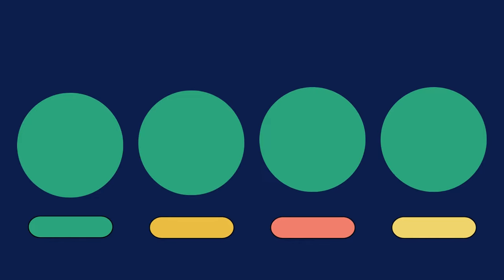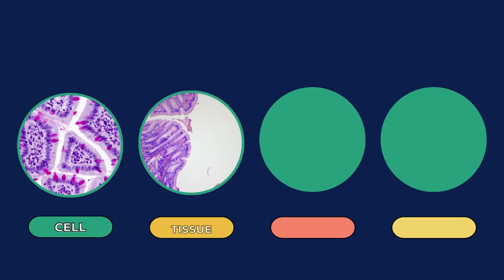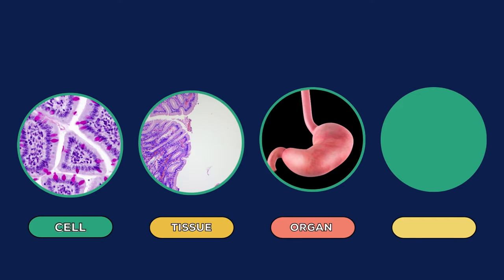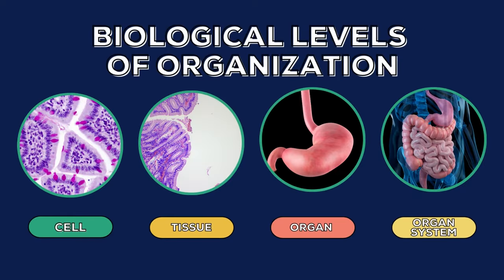Even unicellular organisms have different parts that do different specific functions. For all of us multicellular organisms — hello, hi, that's us — our cells are organized like this. Our body has cells, those cells form tissues, those tissues then form organs, some organs form organ systems, and those organ systems then form us, the organism, the living thing. These are called the biological levels of organization.